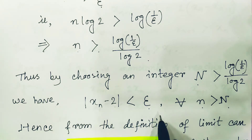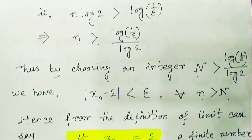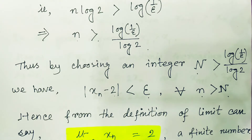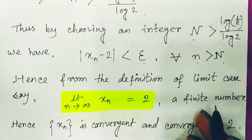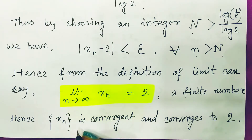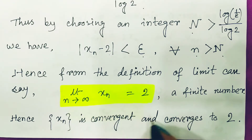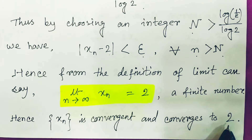Since this definition is satisfied, we can say the limit as n tends to infinity of xn equals 2, which is a finite number. Therefore the given sequence is convergent and it converges to the value 2.